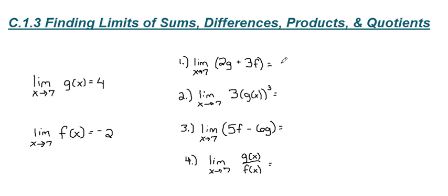So for number one, the limit as x approaches 7 of 2g plus 3f. It's exactly what you'd think it would be: 2 times the value of g plus 3 times the value of f at that same point. So this comes out to 8 minus 6, and the sum of these two limits would be 2.